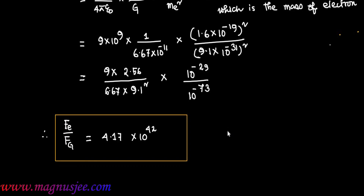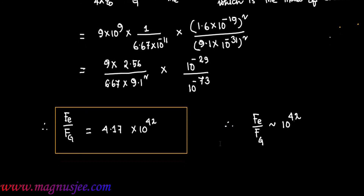Therefore, Fe/Fg = 4.17 × 10⁴². The ratio of electrostatic force to gravitational force of attraction acting between the two electrons is of the order of 10⁴².